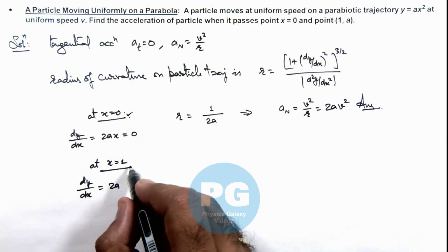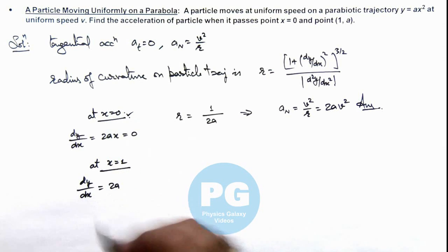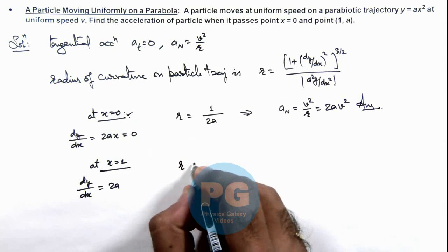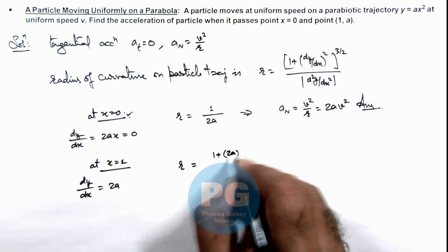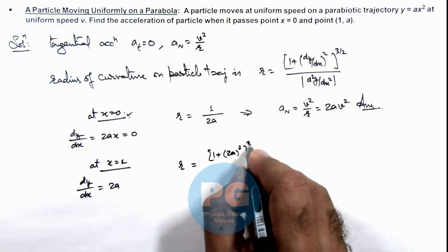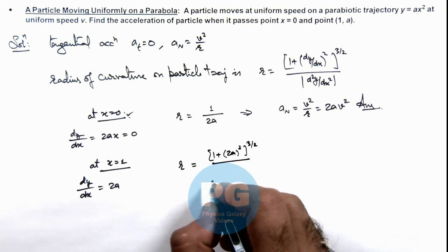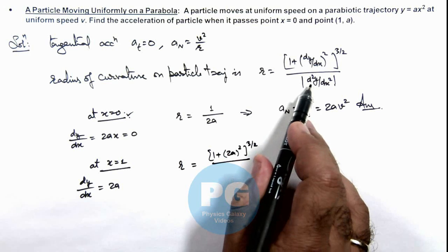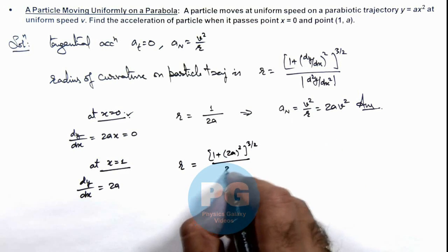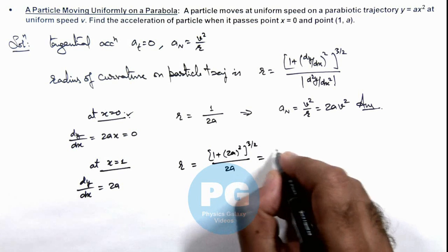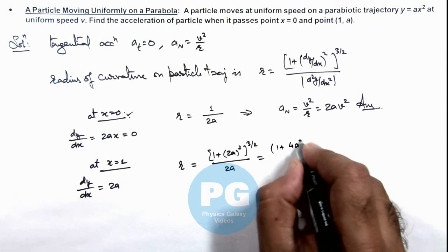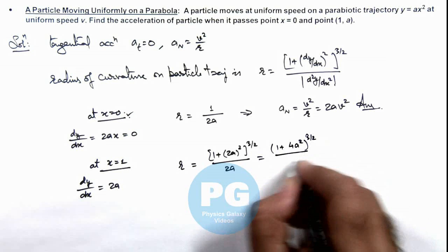For x = 1, as dy/dx = 2ax, we can write the value of r equals [1 + (2a)²]^(3/2) divided by d²y/dx², which is also 2a. On simplifying, we are getting this value as [1 + 4a²]^(3/2) upon 2a.